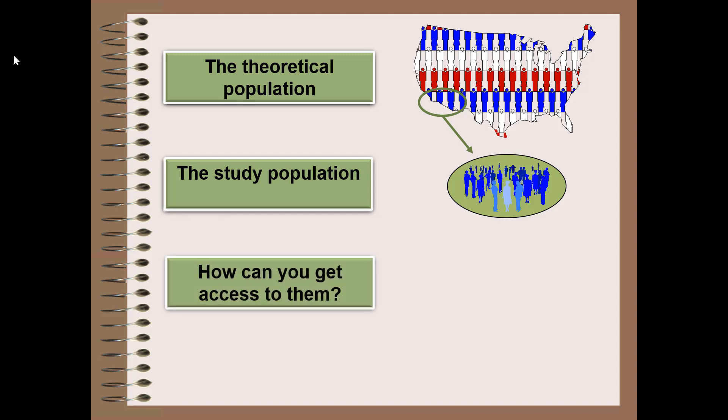Then we ask ourselves how can we get access to that study population? Most of the time this involves some sort of record keeping or record management system. For example, if I was interested in teenagers in LA, I may have to get permission to access school rosters, high school rosters in the LA area. This listing of people and potential participants is referred to as the sampling frame.